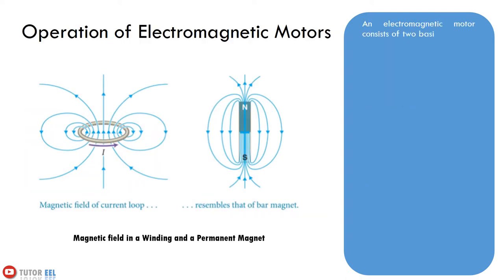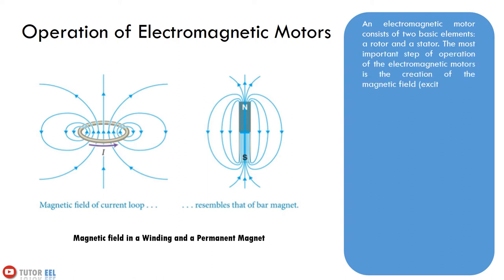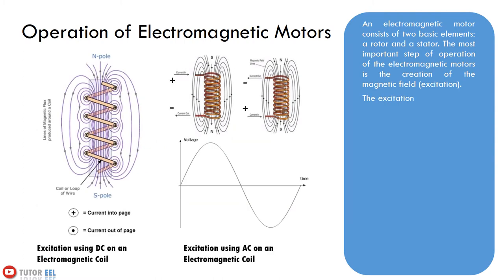An electromagnetic motor consists of two basic elements: a rotor and a stator. The rotating part of the motor is called the rotor and the stationary part is called the stator. Both rotor and stator generate a magnetic field, and the interaction between the two fields produces torque that enables the motor to do useful work. The most important step in the operation of electromagnetic motors is the creation of the magnetic field, that is, excitation. The excitation can be inserted on the stator, rotor, or both.